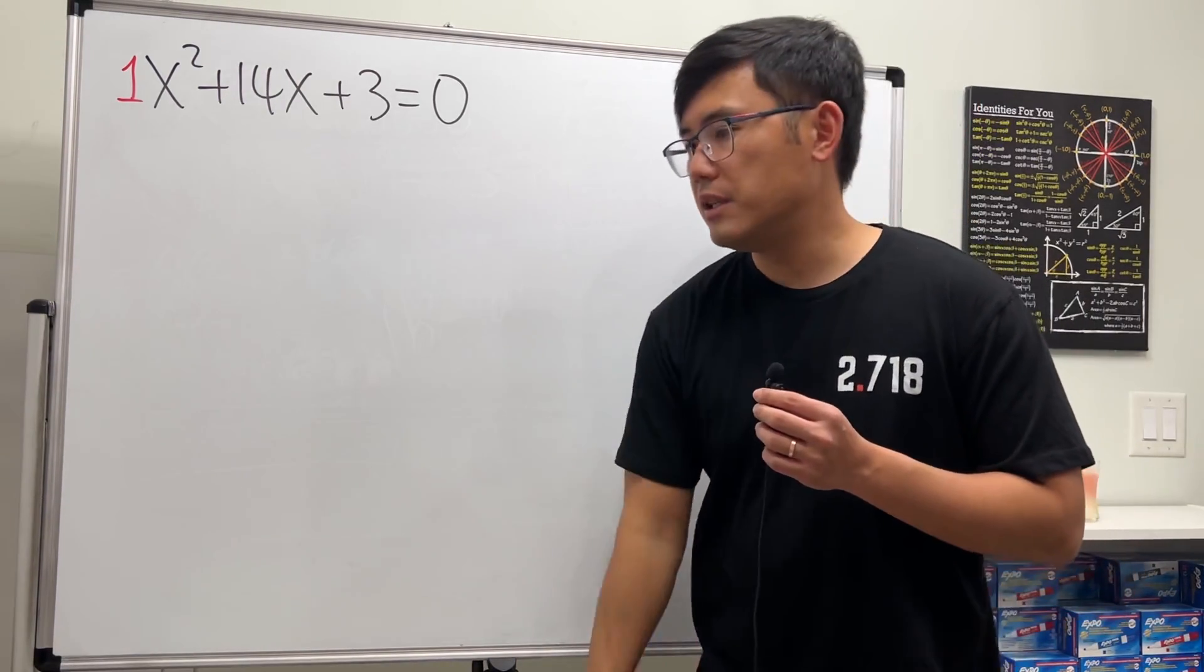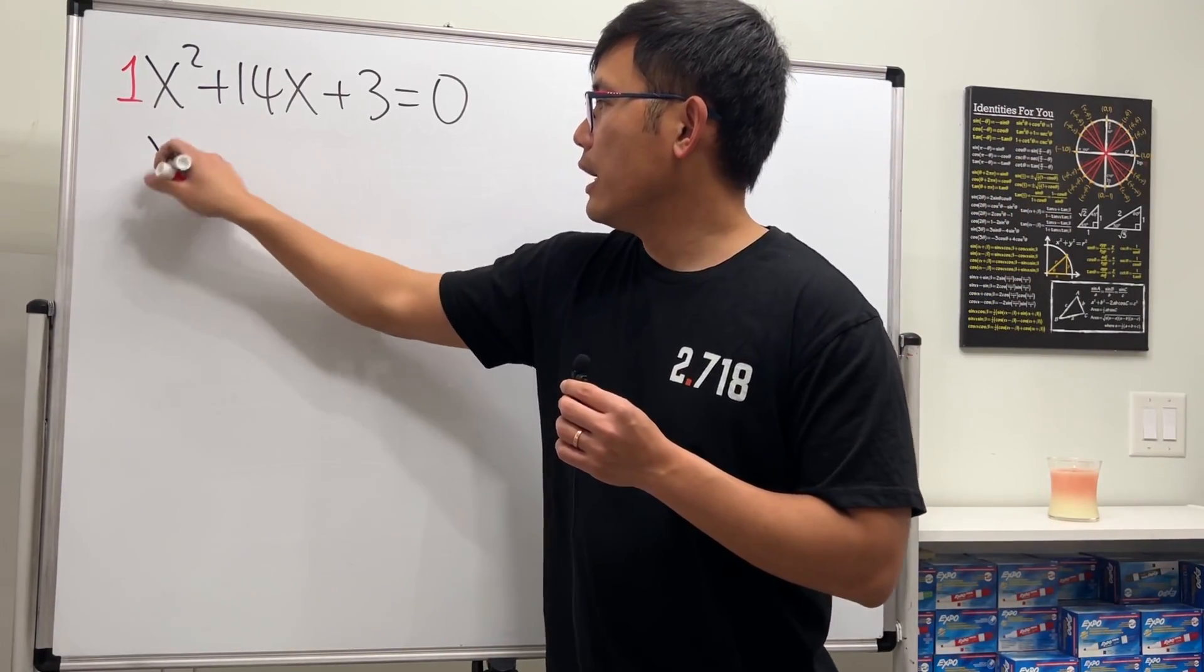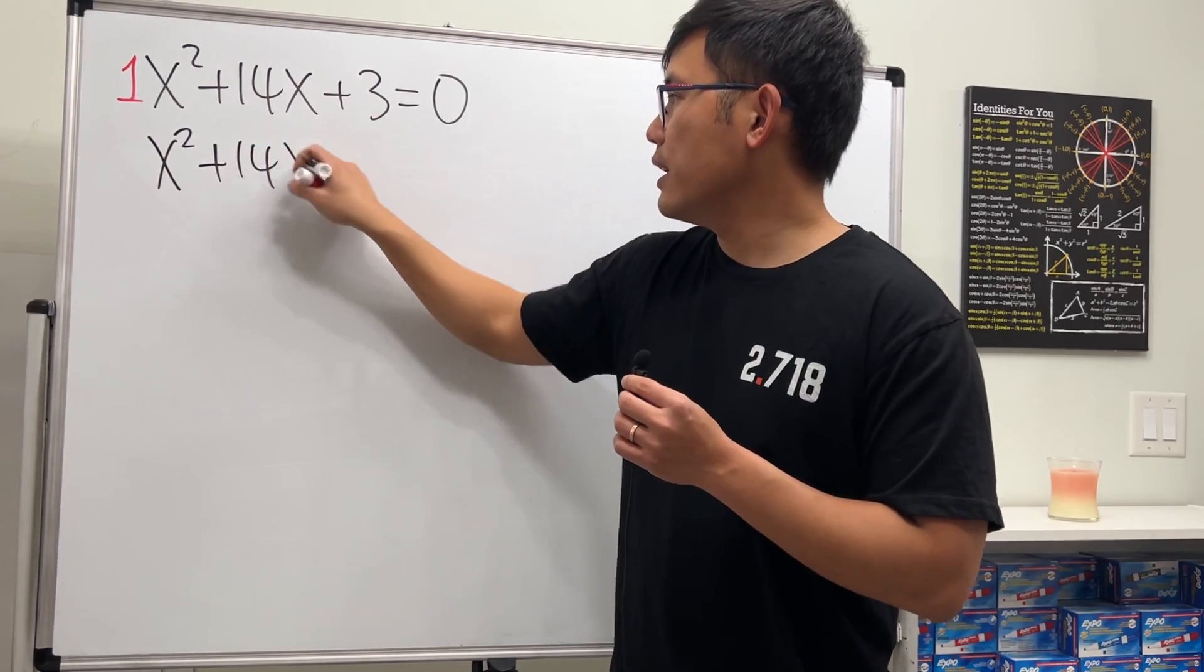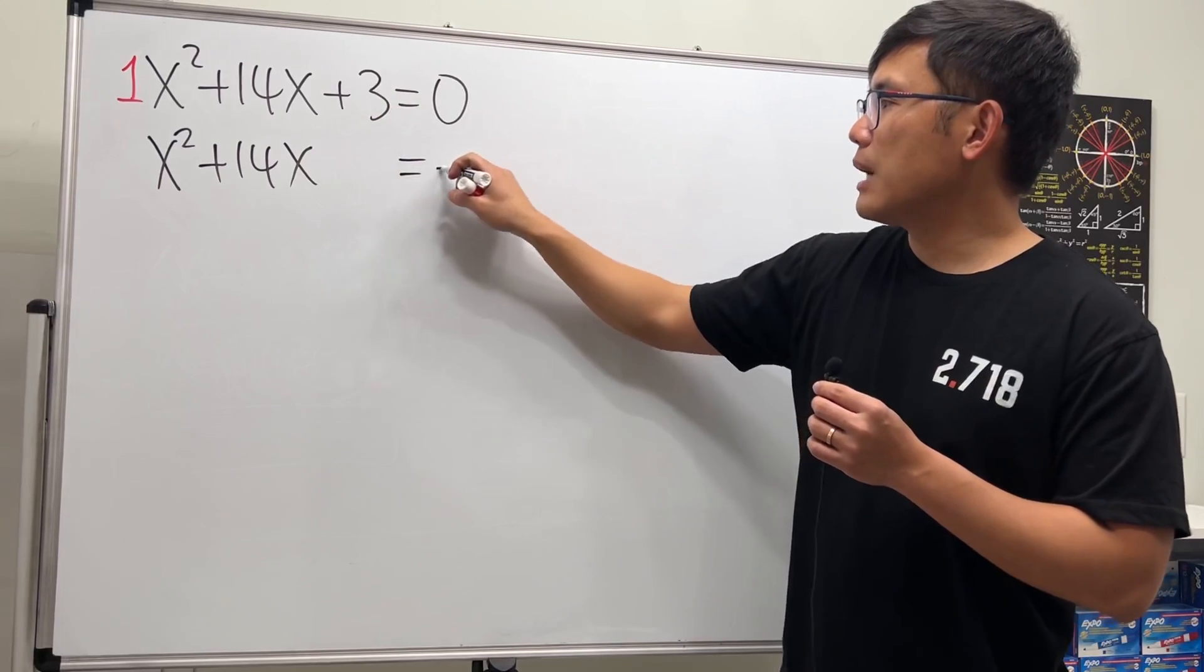So how do we proceed? First, we keep these two terms on one side: x squared plus 14x. Let's put the 3 to the other side—leave a space here. The 3 becomes negative 3 on the right.